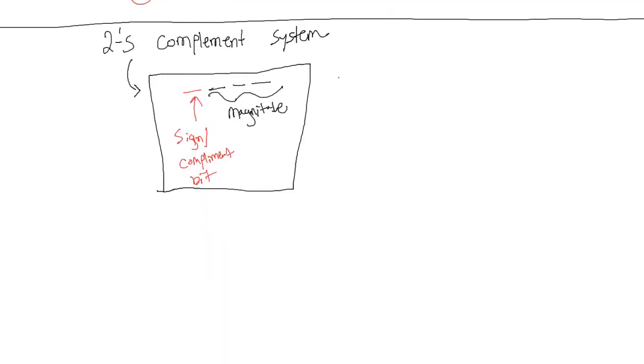Now, how we describe this is we have two cases. Case 1, where the sign bit slash complement bit is equal to 0. And in the second case, the sign bit slash complement bit is equal to 1.